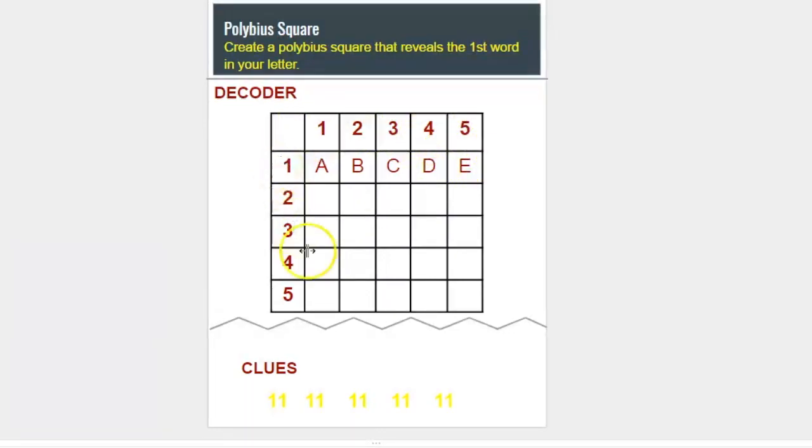So in order to do that, we have to create a full decoder within the Polybius Square. And it's pretty simple to do. You just have to enter every letter of the alphabet.